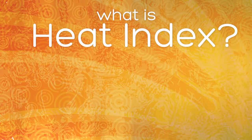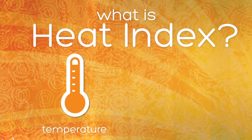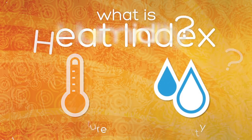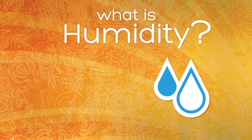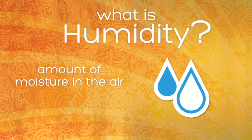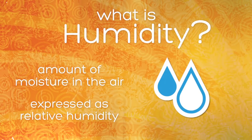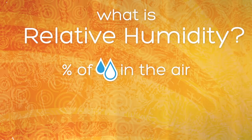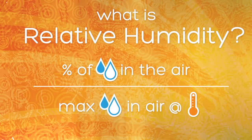The heat index is mainly based on two things: the actual temperature and humidity. What is humidity? Well, humidity is a general term that's used for the amount of moisture in the air. This is usually expressed in terms of relative humidity, or as a percentage. Relative humidity is the percentage of moisture in the air compared to the maximum amount of moisture the air can hold at that temperature.